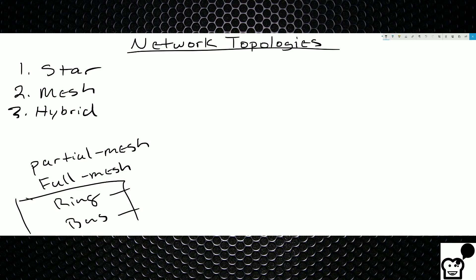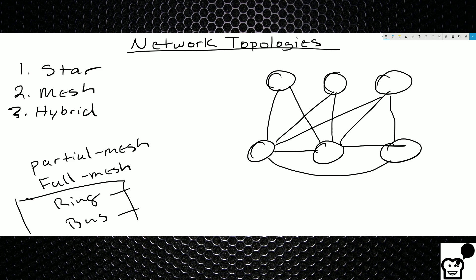Now the second one is going to be a mesh topology. So I'm going to use three devices down here and three devices up here. So a mesh is broken into two parts, either a partial mesh or a full mesh. And what a mesh means is that every device has a connection to every other device. So here if we were doing a full mesh, this one would have a connection to all of these devices. So in a full mesh topology you have redundant connections to every device.